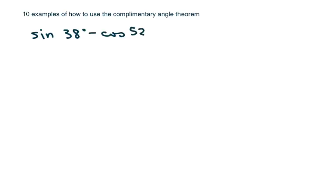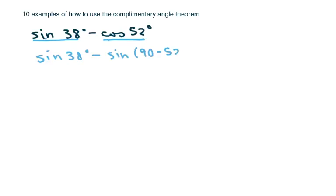We have this first example and we want to simplify it without using a calculator. I can either change this to cosine, because sine and cosine are co-functions, or change this to sine. I'm going to go ahead and change the second part to sine. So I have sine of 38 degrees minus sine of 90 minus 52 degrees. So what we get is sine of 38 minus sine of 38, which equals 0.